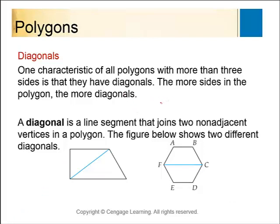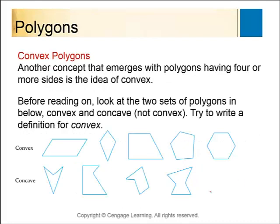A characteristic of polygons with more than three sides is that they have diagonals. A diagonal is a line segment that joins two non-adjacent vertices. For example, vertices A and B are adjacent, but F and B are not adjacent, so the segment FB is a diagonal. Each vertex in a hexagon has three different diagonals, and just because the diagram doesn't show all of them doesn't mean they aren't there.